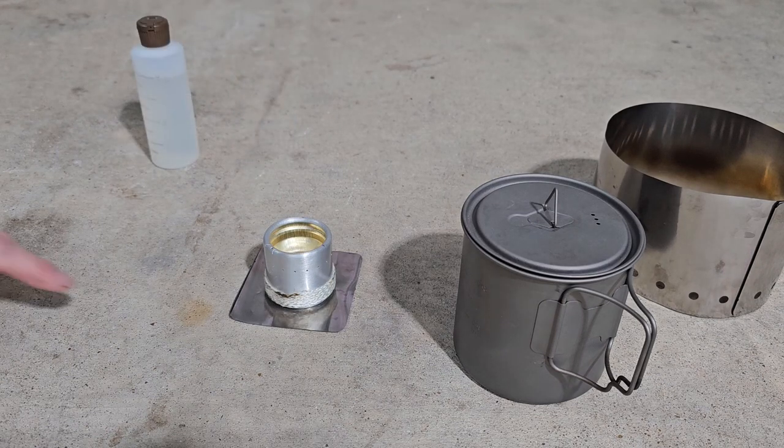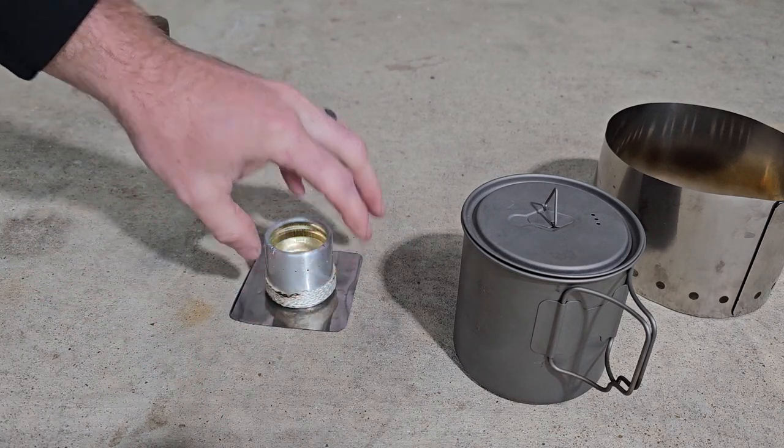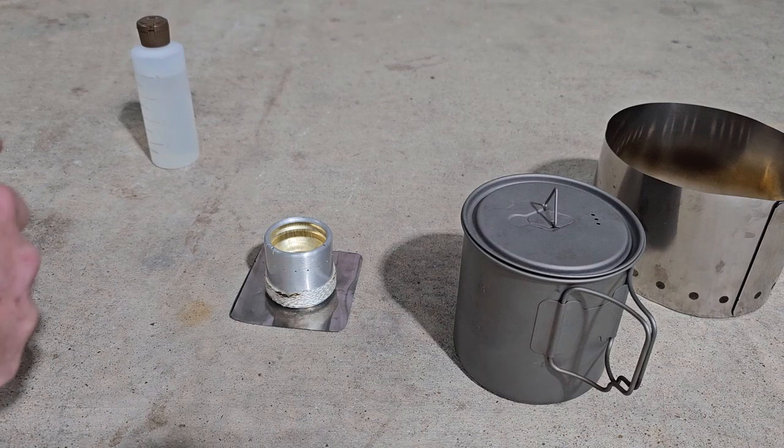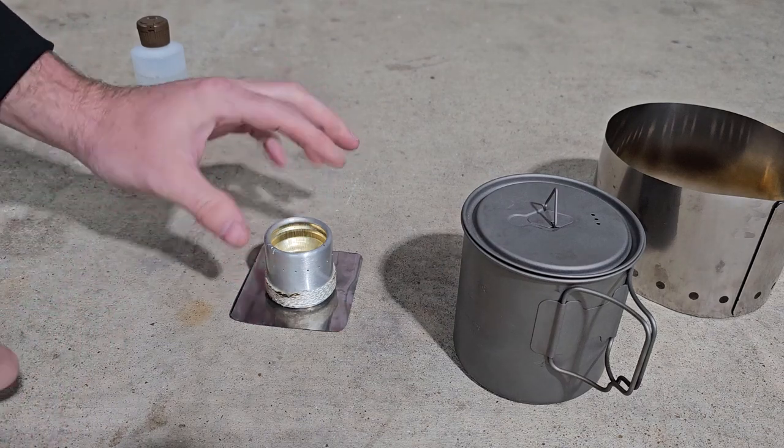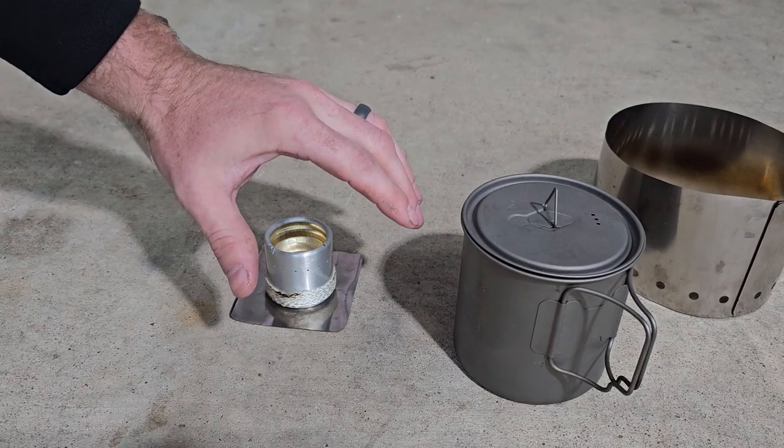So now if it's cold outside you add some fuel right here to this wrap and you can light this - that'll help prime the stove and heat it up.